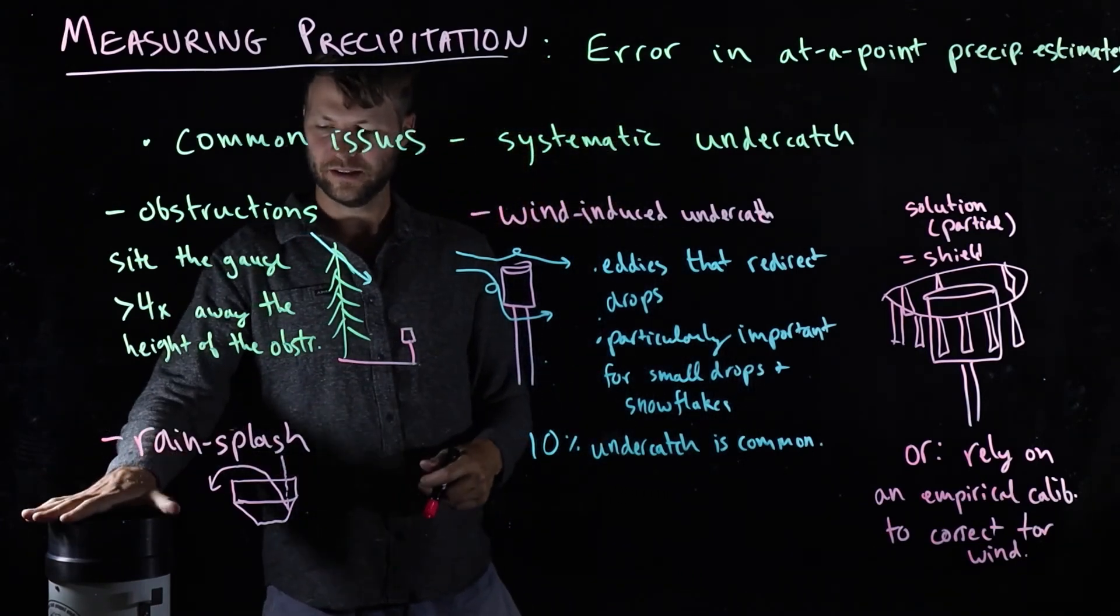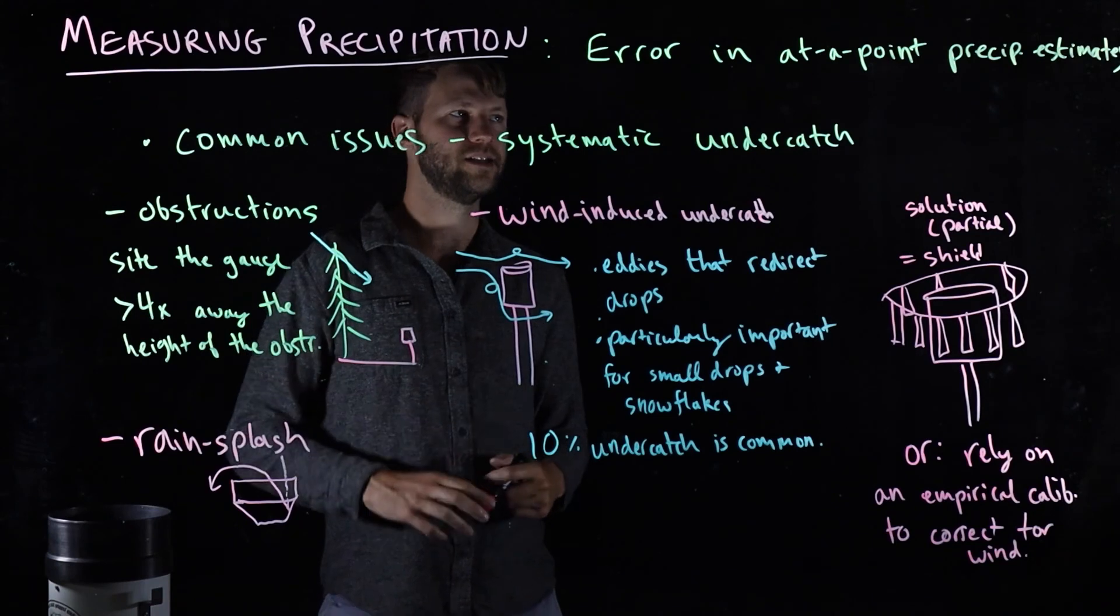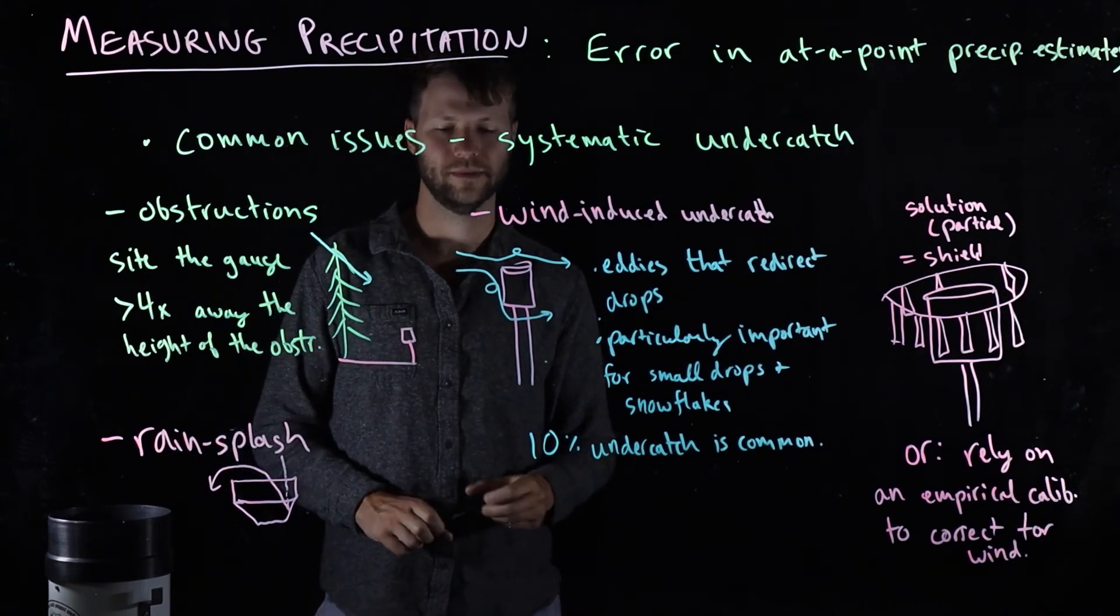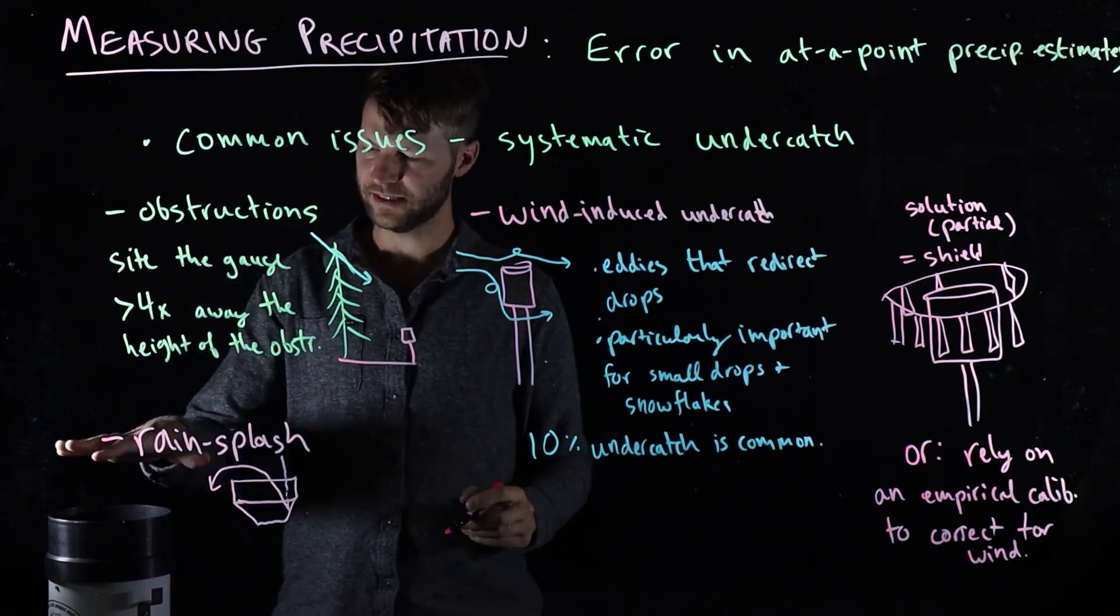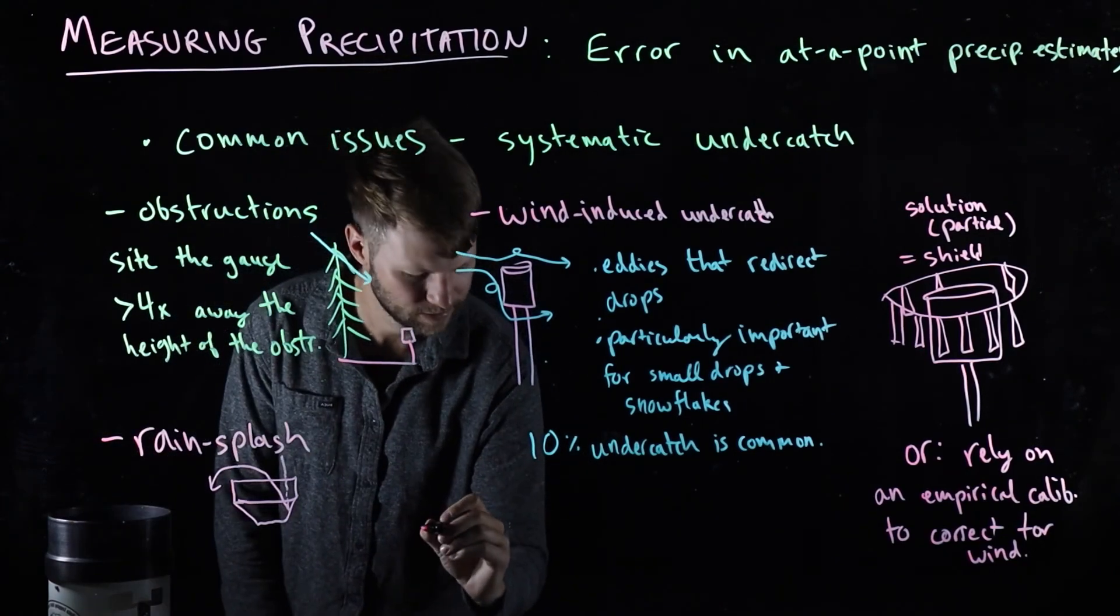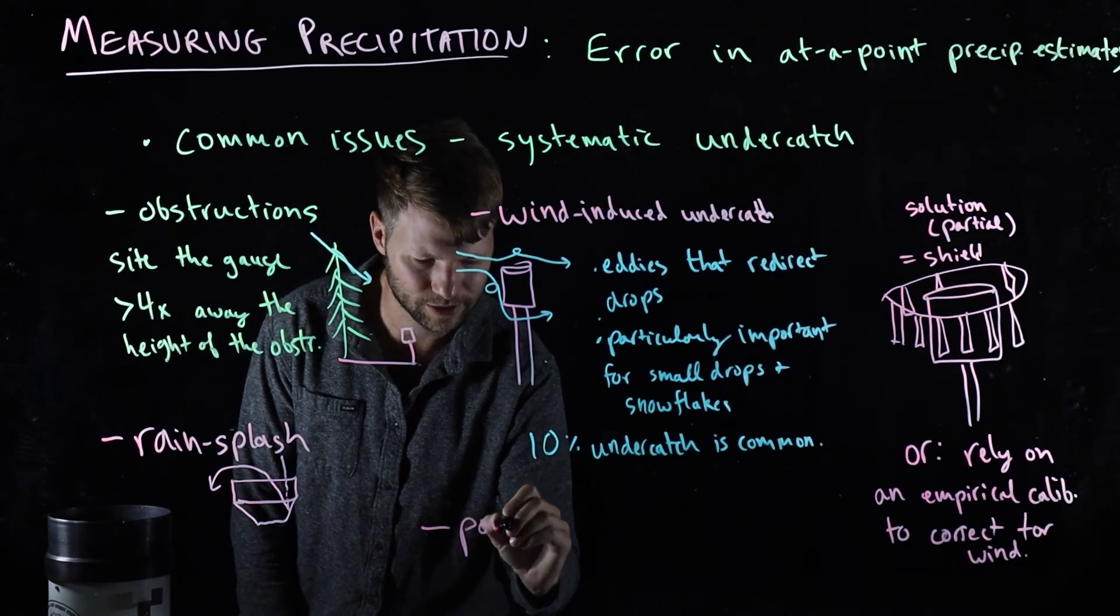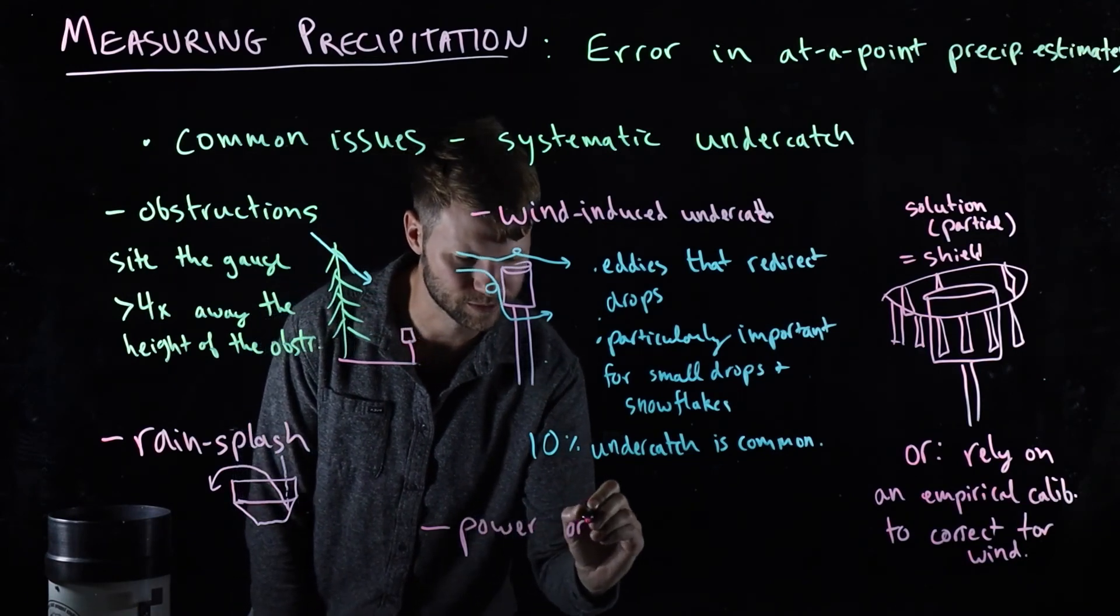There's one other unfortunately very common reason that we might underestimate or undercatch the amount of precipitation that's happening. And that's because these things are installed in remote areas very commonly. And quite simply, you might have power or instrument failure.